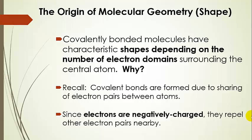What we know is that covalently bonded molecules have characteristic shapes, and it's going to depend on the number of electron domains that surround the central atom. What we're going to try to answer here is why is that, from where does that arise, and what are the characteristic shapes for various bonding patterns in molecules.